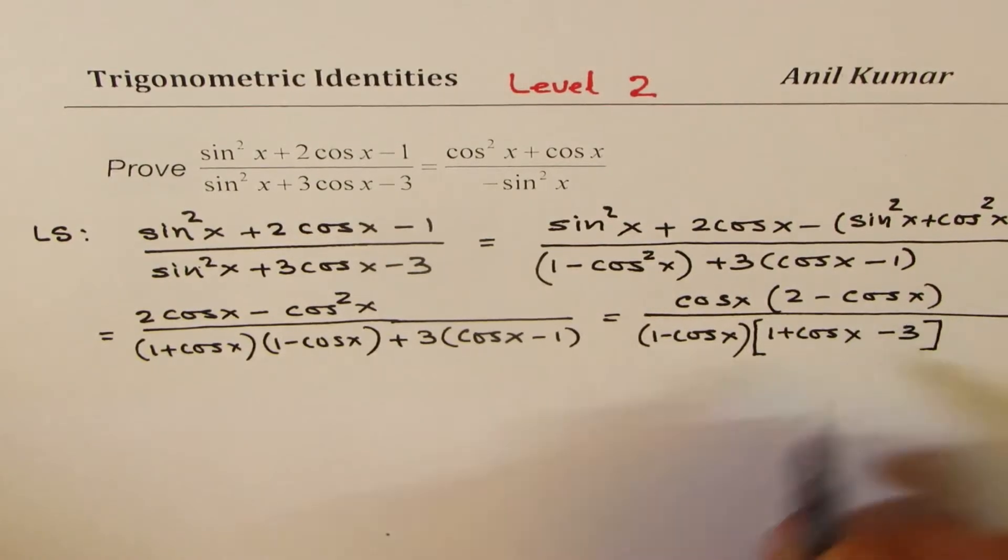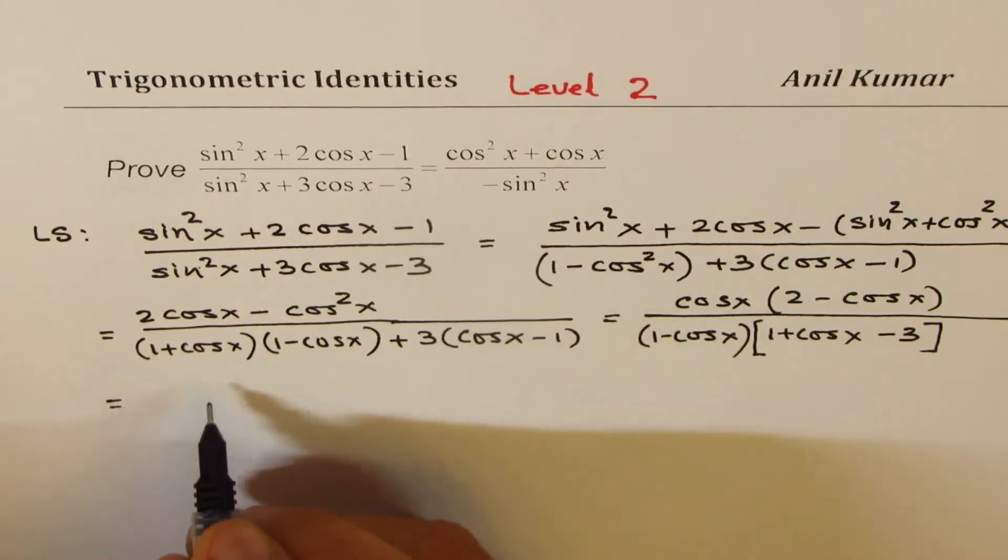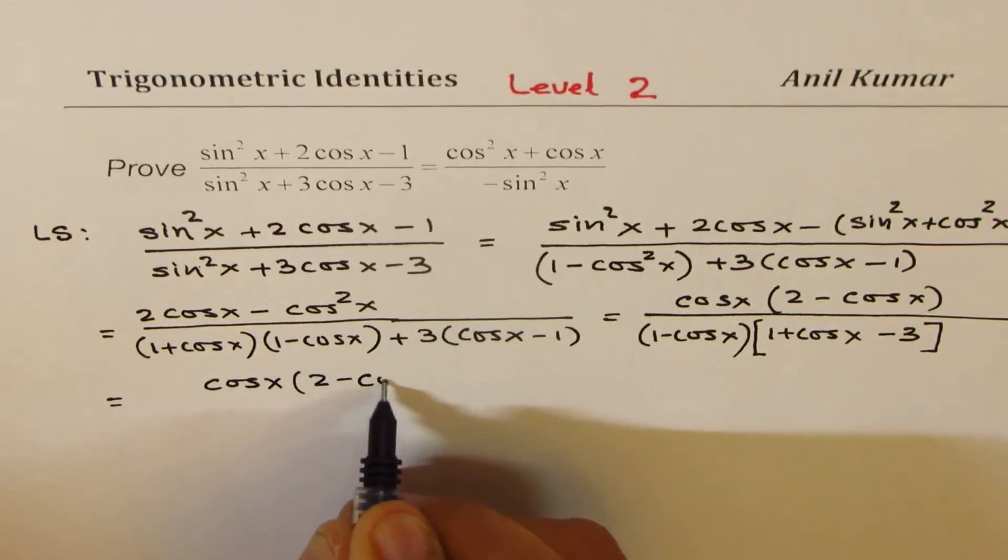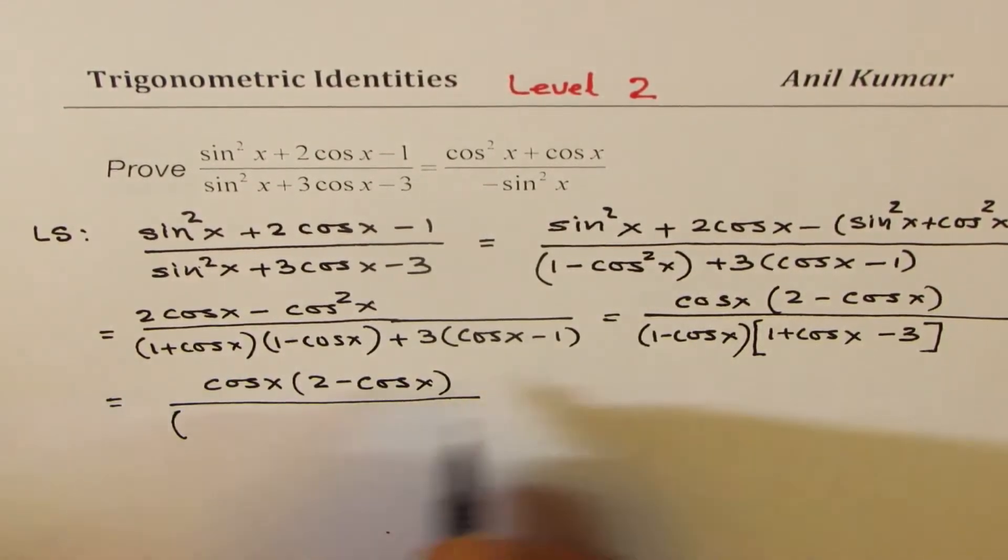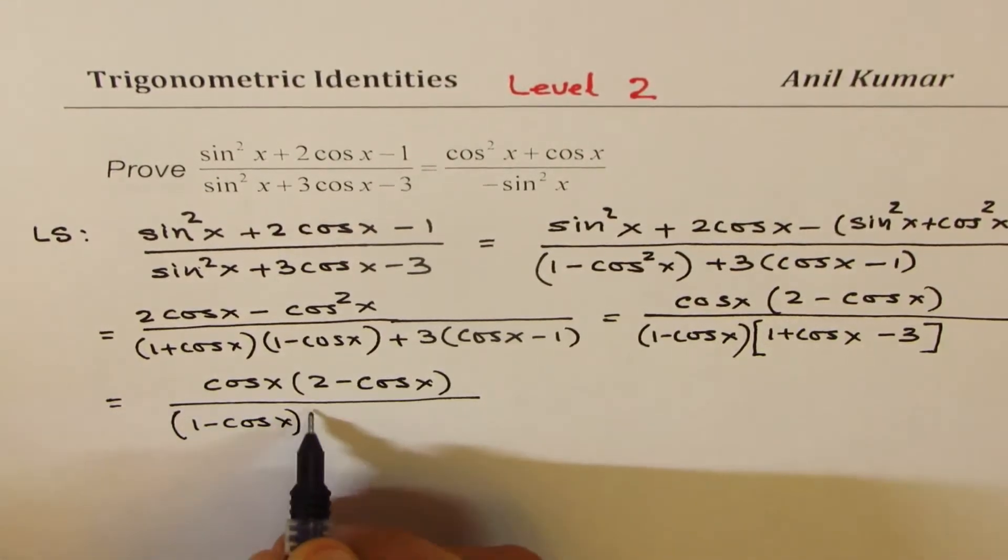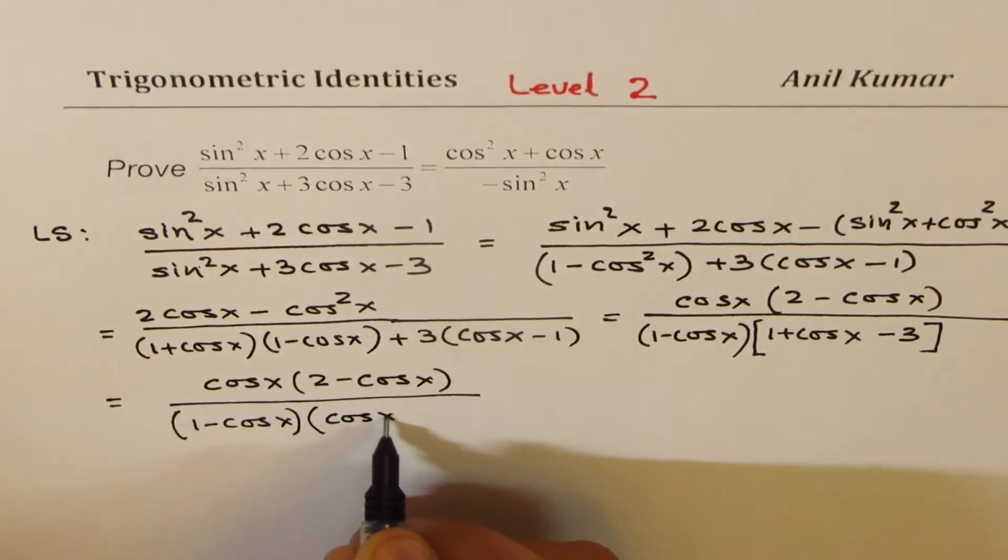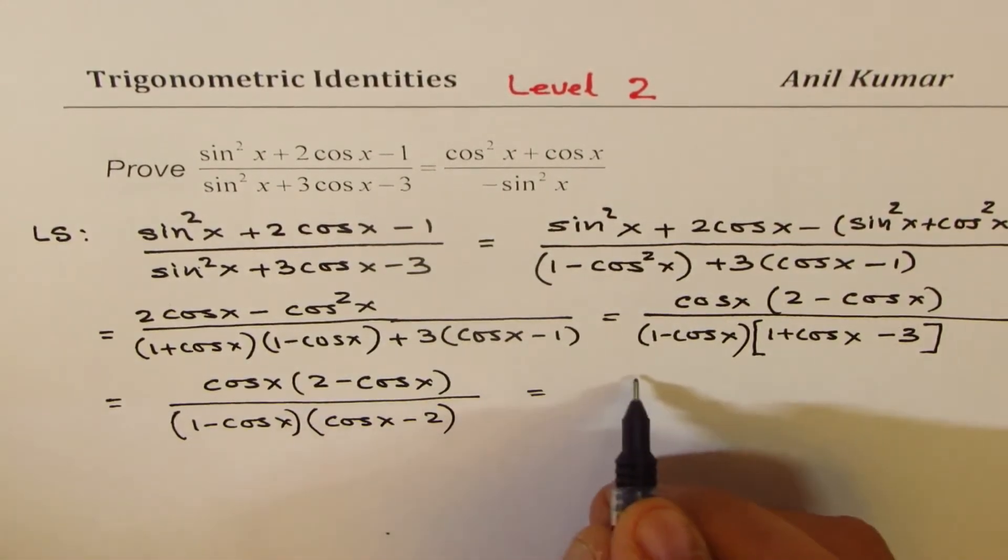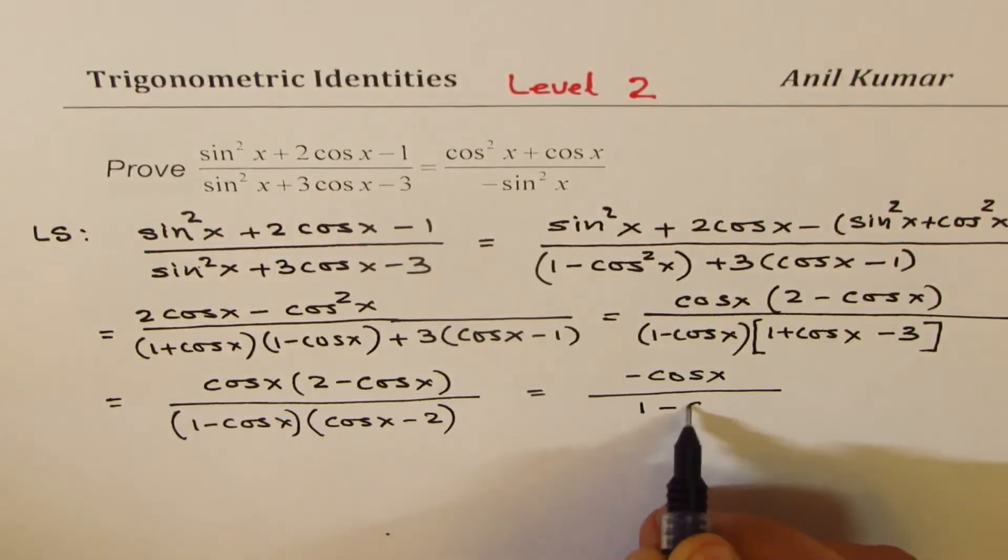Now, we could write numerator as cos x times (2 - cos x). And in the denominator, what we get is (1 - cos x) times (-2). So we get (cos x - 2). Now these can cancel with a negative sign. So what you get here is -cos x over (1 - cos x).